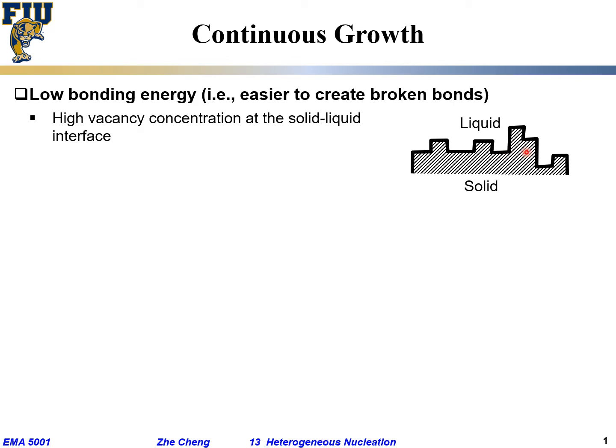Missing atoms means vacancy — near the solid-liquid interface. Low bonding energy means you can have many dangling bonds; it doesn't matter that much, and at the same time you can have many missing atoms, so-called vacancies. Whenever you break a bond, you have to spend energy, but you don't have to spend much, because the bonding energy is low.